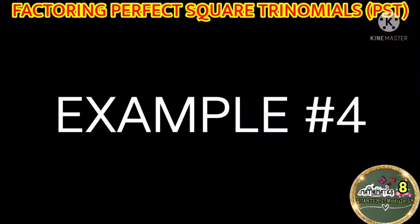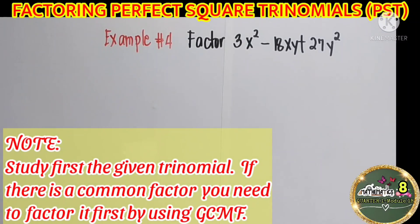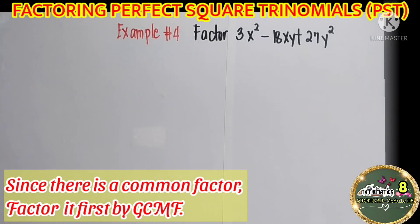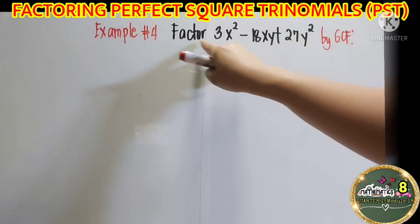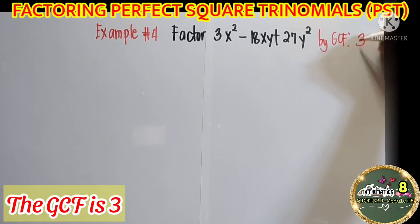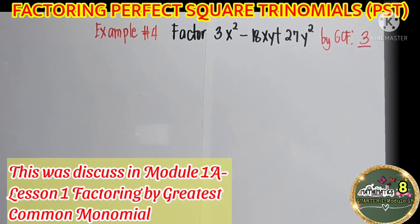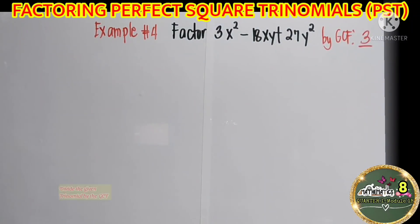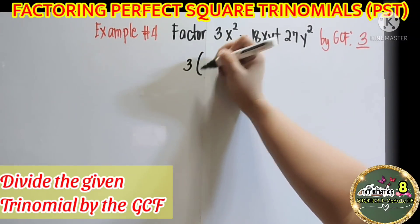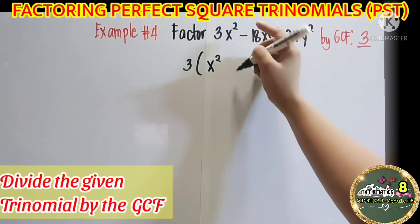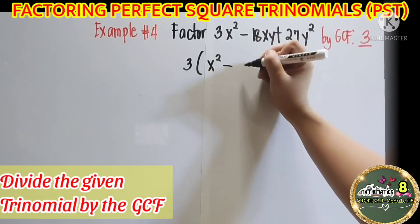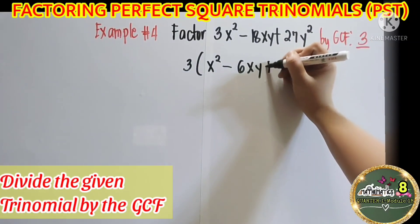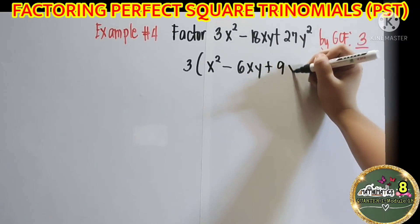Example number 4: factor 3x squared minus 18xy plus 27y squared. Since there is a common factor, factor it first by greatest common monomial factor. Let us identify the GCF — the GCF is 3. This was discussed in Module 1A, Lesson 1: Factoring by Greatest Common Monomial Factor. Let us divide the given trinomial by the GCF: 3x squared divided by 3 is x squared, minus 18xy divided by 3 is 6xy, plus 27y squared divided by 3 is 9y squared.